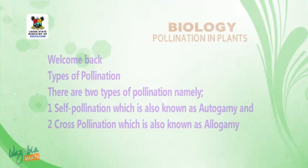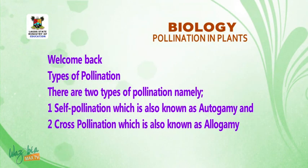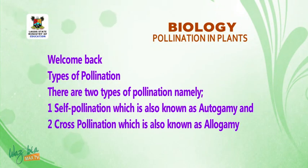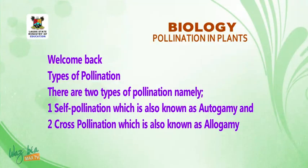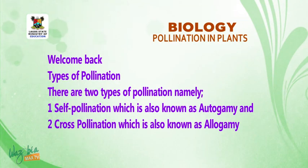Welcome back. Now we will discuss types of pollination. There are two types of pollination, namely: self-pollination, which is also known as autogamy — A-U-T-O-G-A-M-Y.